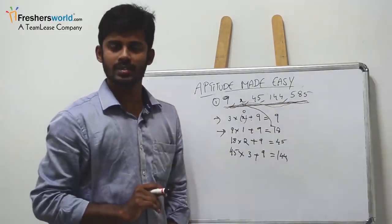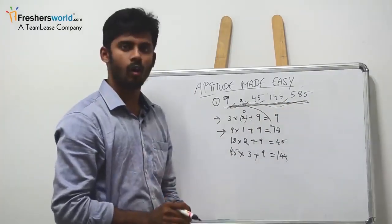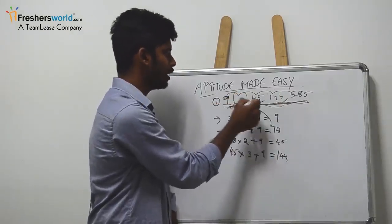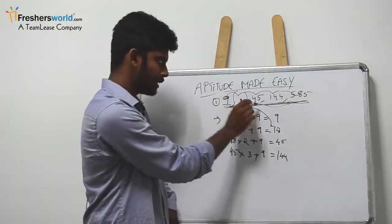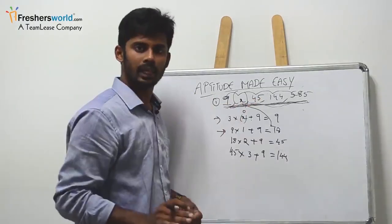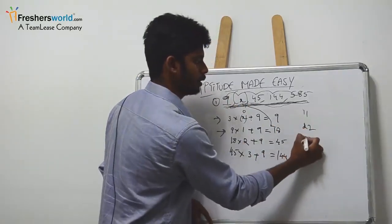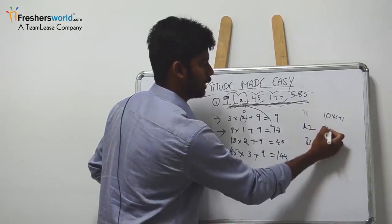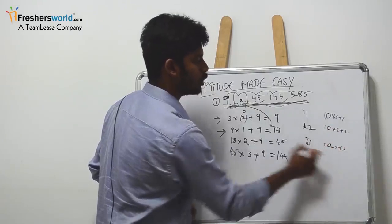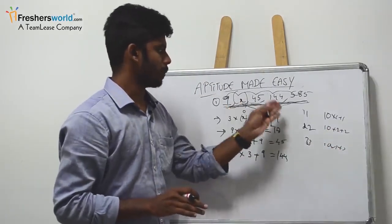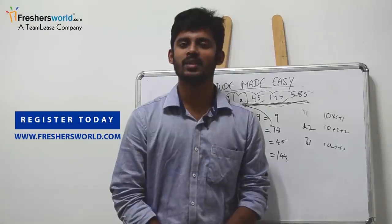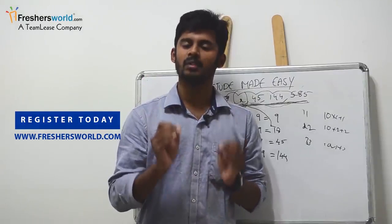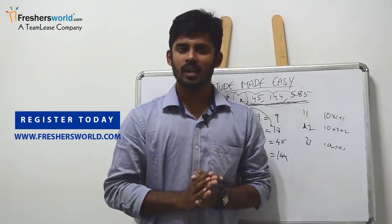That is how you crack this kind of number series problem. When you get a number series, try to figure out an equation that is a multiple of a common number, or find which number is directly a multiple of all terms. For example, a series like 11, 22, 33 could follow 10 times n plus n. Try to figure out how the numbers match a table of one particular number. Hope the video was interesting — if you have any queries, please comment below. Until next time, good luck and goodbye.